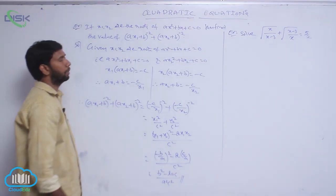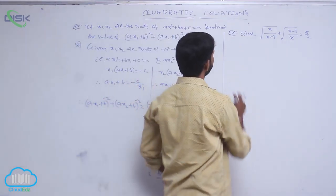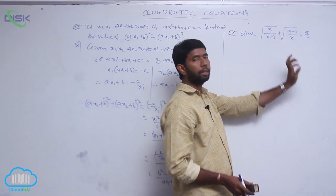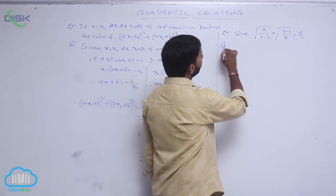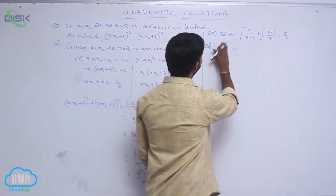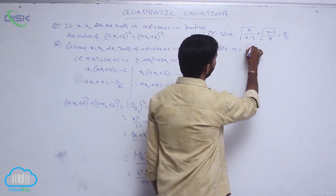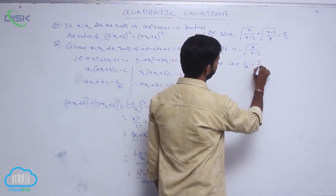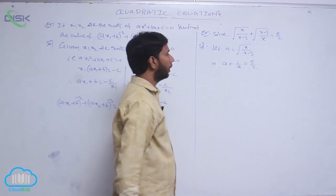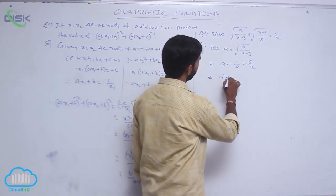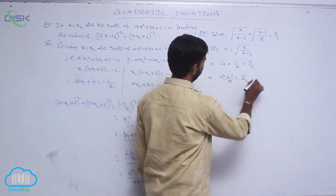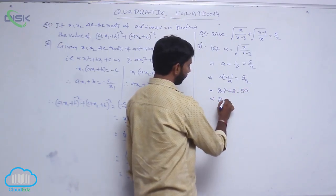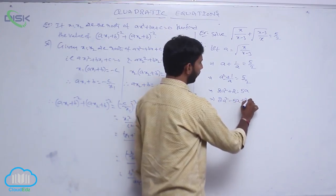Now for the next example: solve √(x/(x−3)) + √((x−3)/x) = 5/2. Let a = √(x/(x−3)), which implies a + 1/a = 5/2. Taking LCM: (a² + 1)/a = 5/2, which implies 2a² + 2 = 5a, that is 2a² − 5a + 2 = 0.